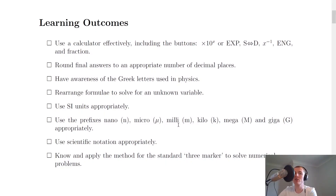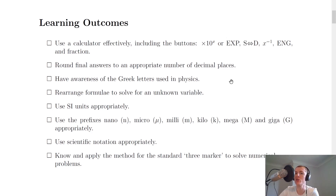Here are the learning outcomes for the introduction topic of the National 5 Physics course — there's not too many. You need to be able to use a calculator effectively, including the buttons: times 10 to the x (or EXP, depending on which calculator you have), the S-to-D button which converts decimals into fractions and back, the x to the minus 1 inverse button, and the ENG and fraction buttons.